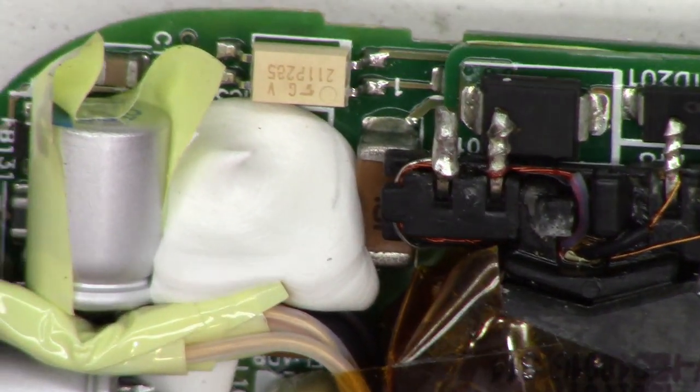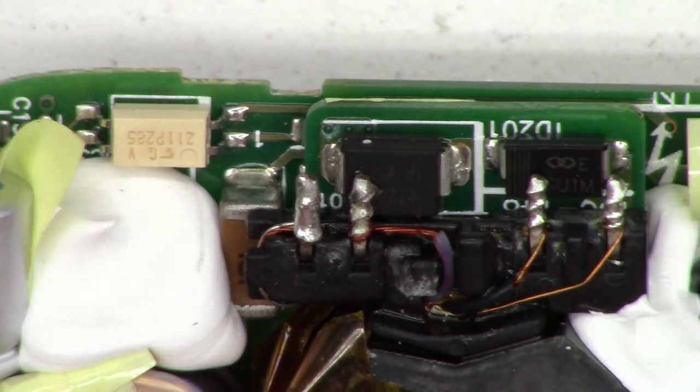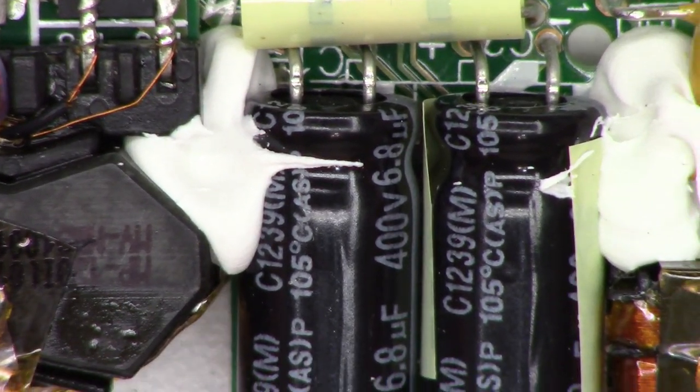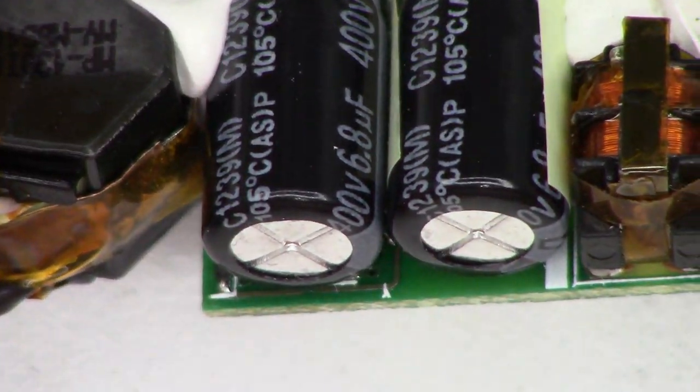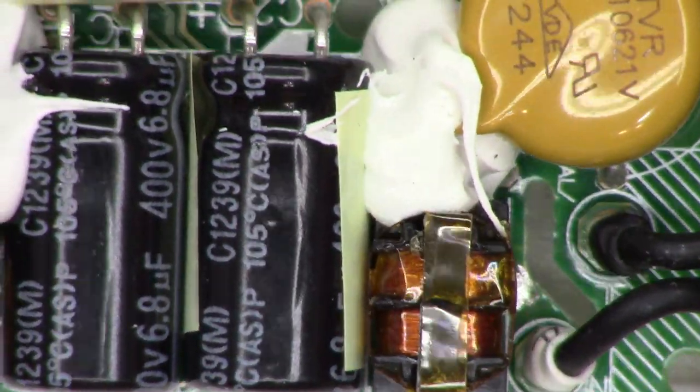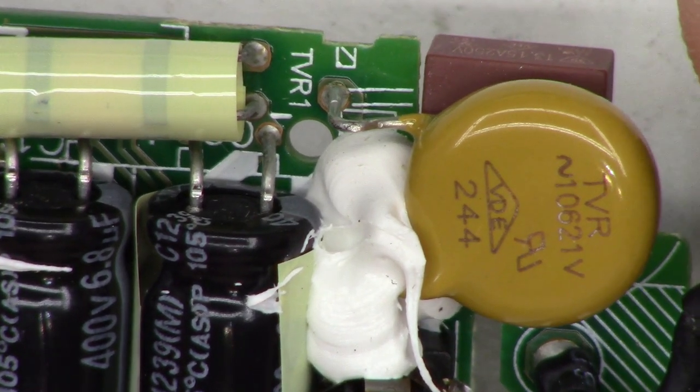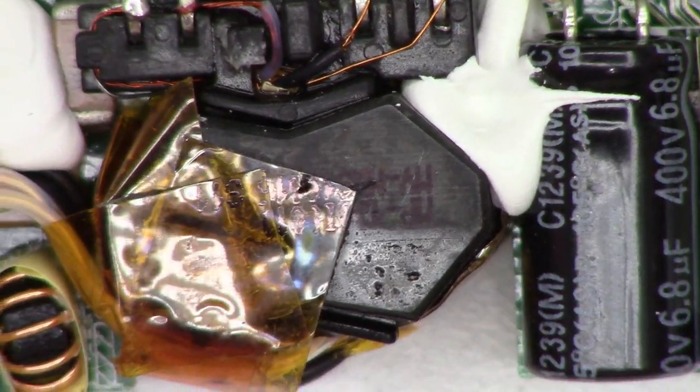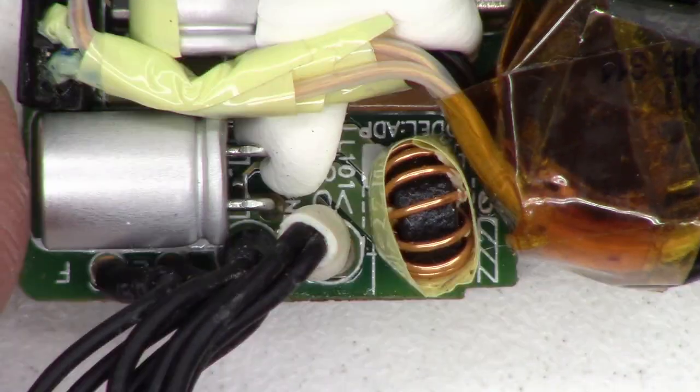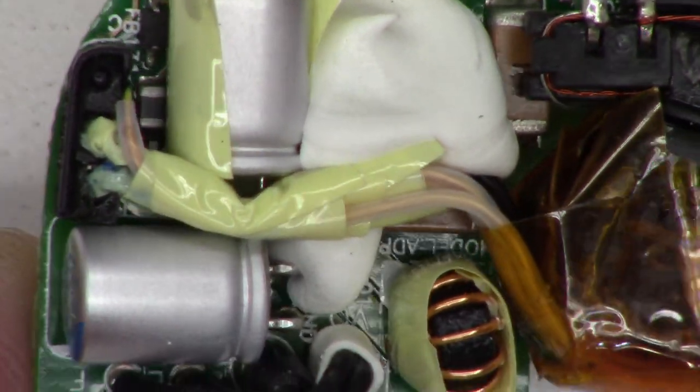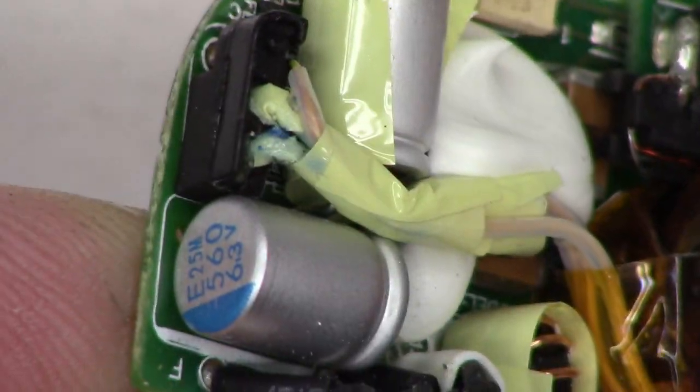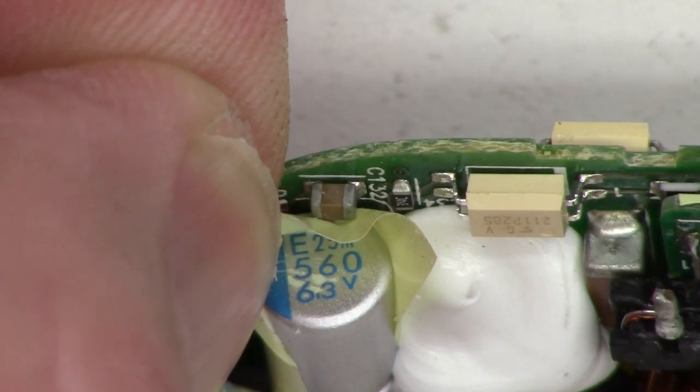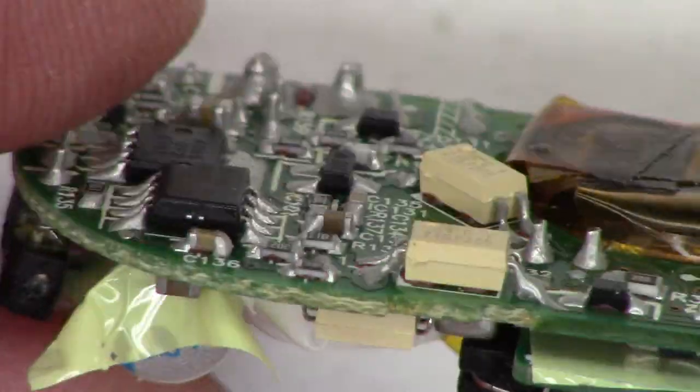Here's a quick close-up view of it. I see an opto-isolator, a couple of diodes, a couple of 6.8 microfarad 400 volt capacitors. They're not bulged whatsoever. There's a MOV, the main switching transformer, an output choke, and over here are a couple of output capacitors, 560 at 6.3 volts.